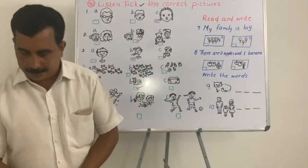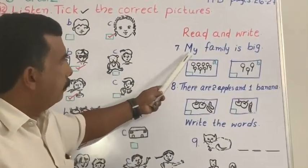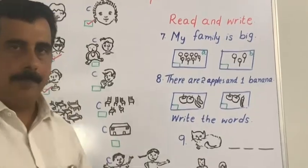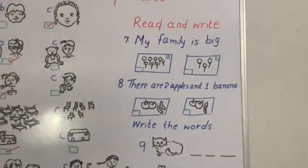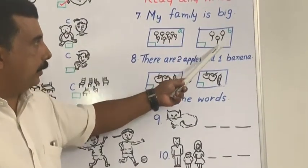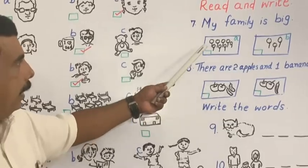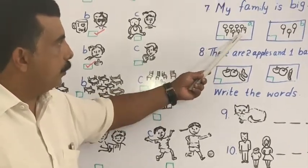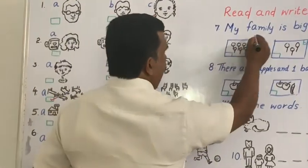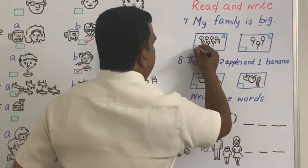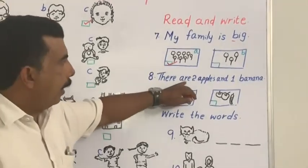Read and write is very easy — you are observing the picture and ticking the correct boxes. Question number 7: 'My family is big.' How do you identify a big family? Father, mother, and more children. Just look here — how many are here? One, two, three — is it big or small? It's small. Which is the big family? One, two, three, four, five, six, seven. So the answer is option A.